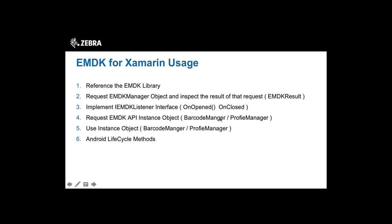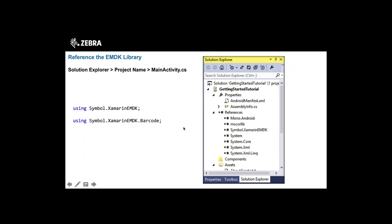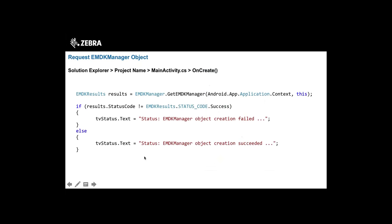For EMDK usage there are about six key steps. First, add a reference to the EMDK library. Next, request an EMDK Manager object — this gives access to the lower-level APIs: Barcode Manager and Profile Manager, the two APIs exposed in the EMDK for Xamarin. When using the EMDK Manager object, make sure to handle these objects properly in Android lifecycle methods — onCreate, onDestroy, onPause — since this is an Android application.